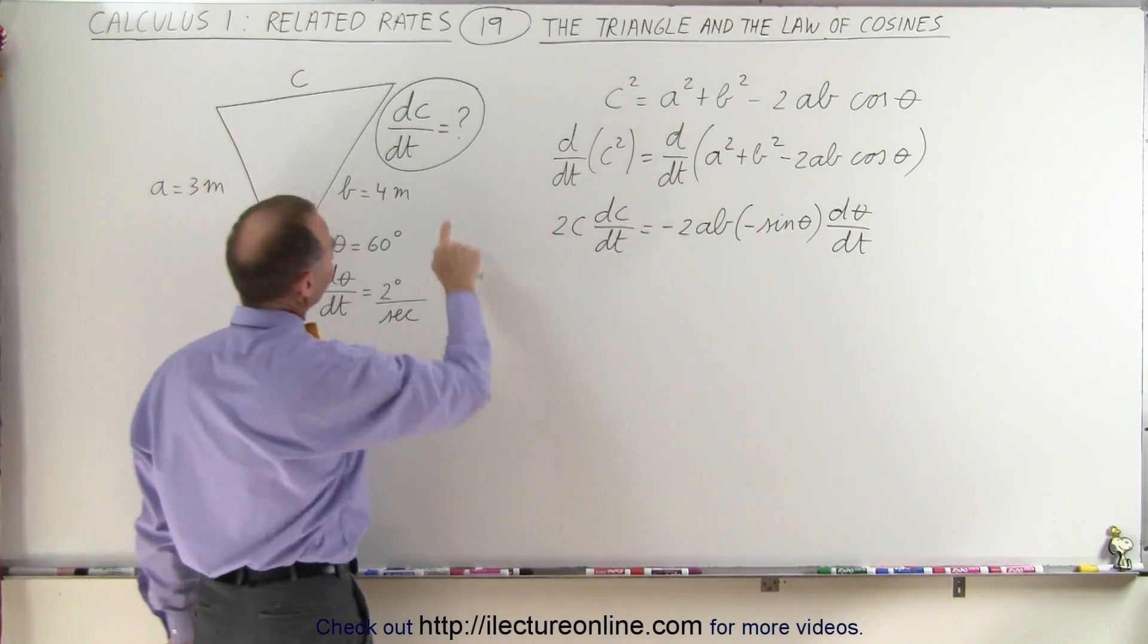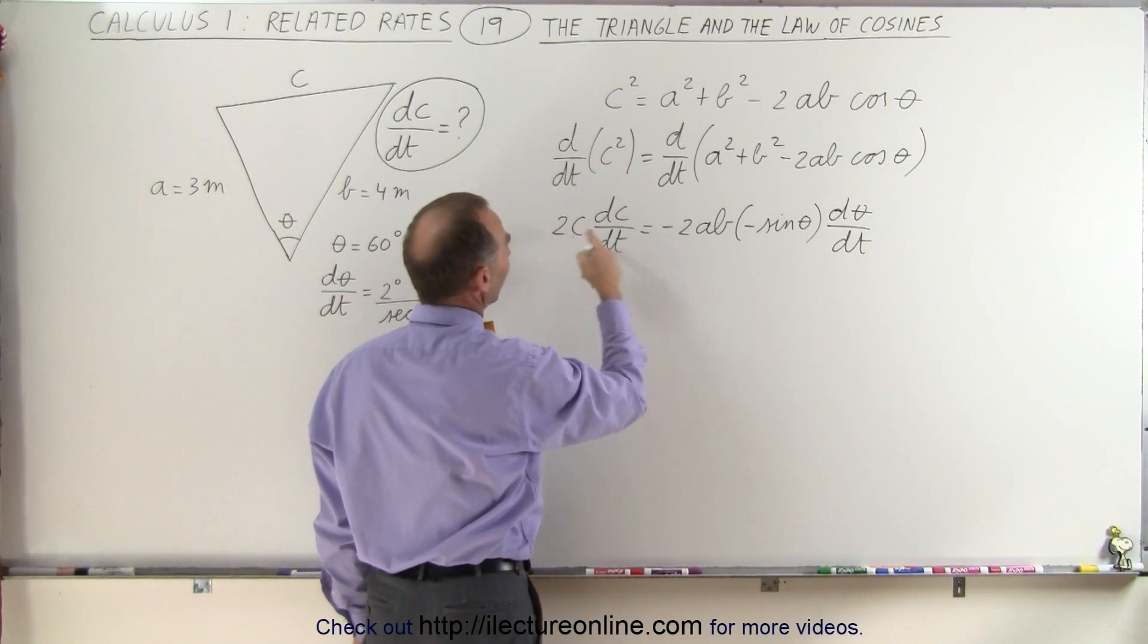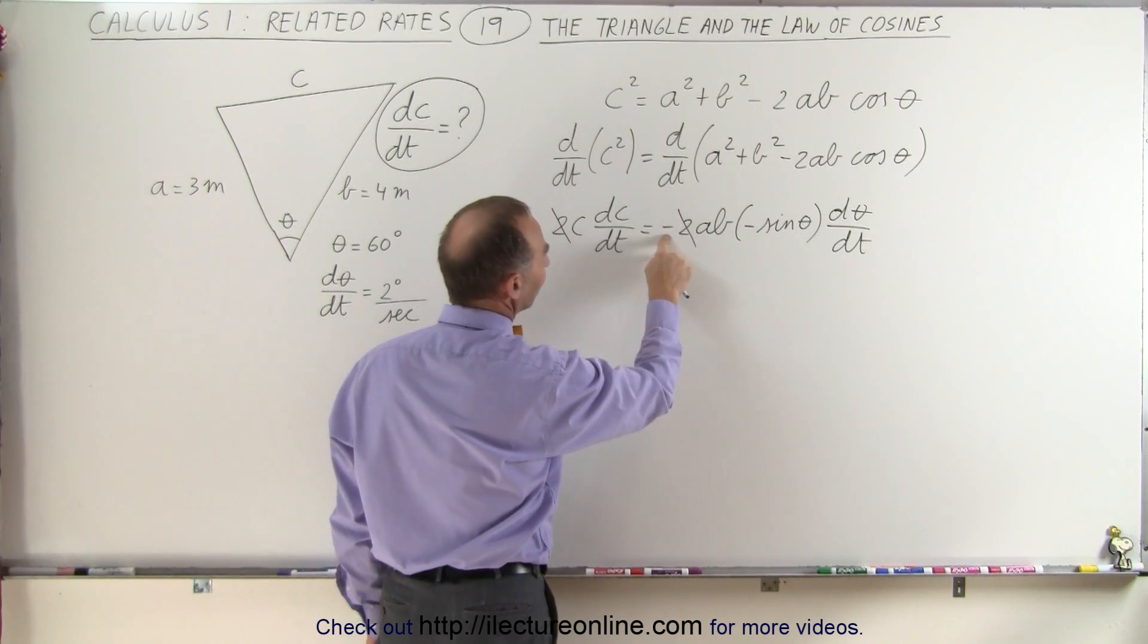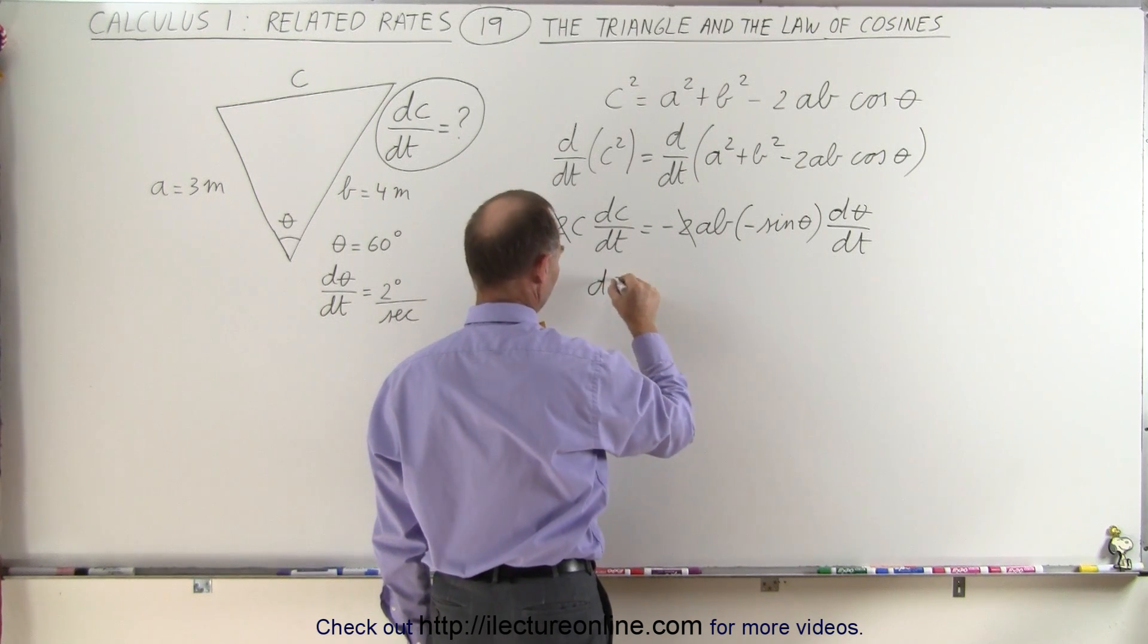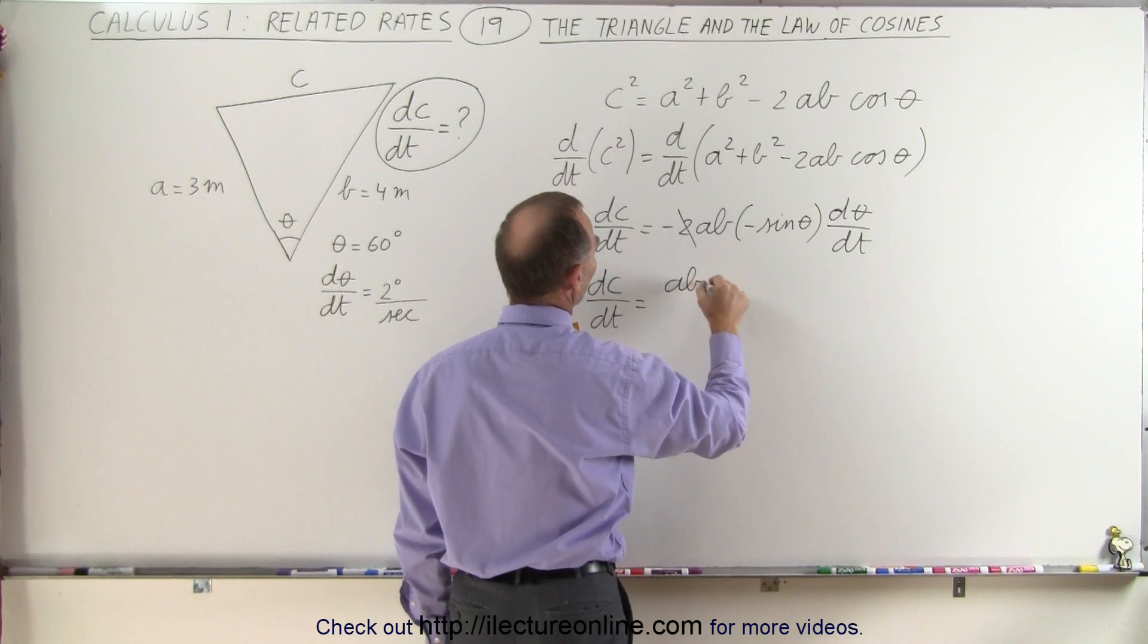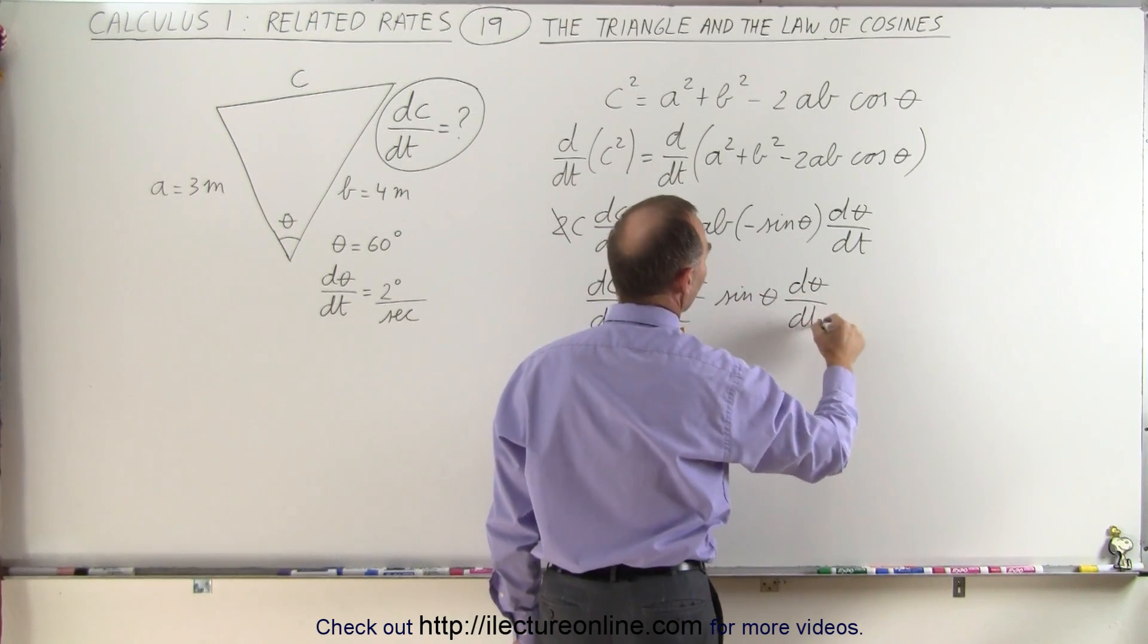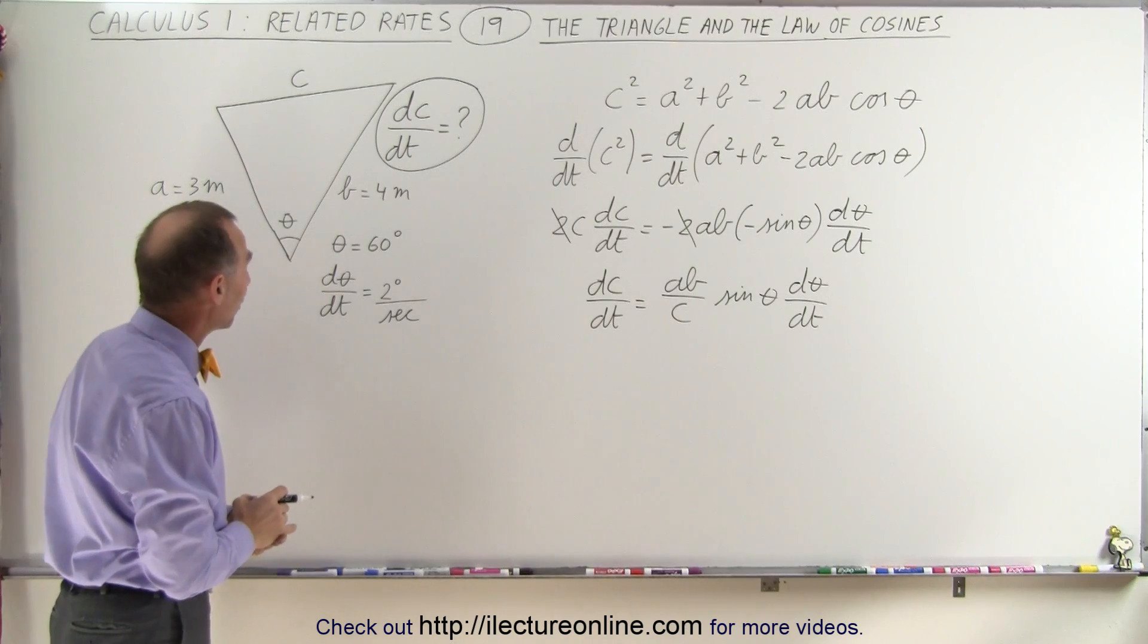Now notice we're trying to find dC/dt, so we have to isolate this. First, we can divide both sides by 2, and then divide both sides by C. Notice that this negative times this negative makes the right side positive, so we end up with dC/dt equals AB divided by C times the sine of theta times dθ/dt. We know everything on the right side of the equation, so all we have to do now is plug in what we know.